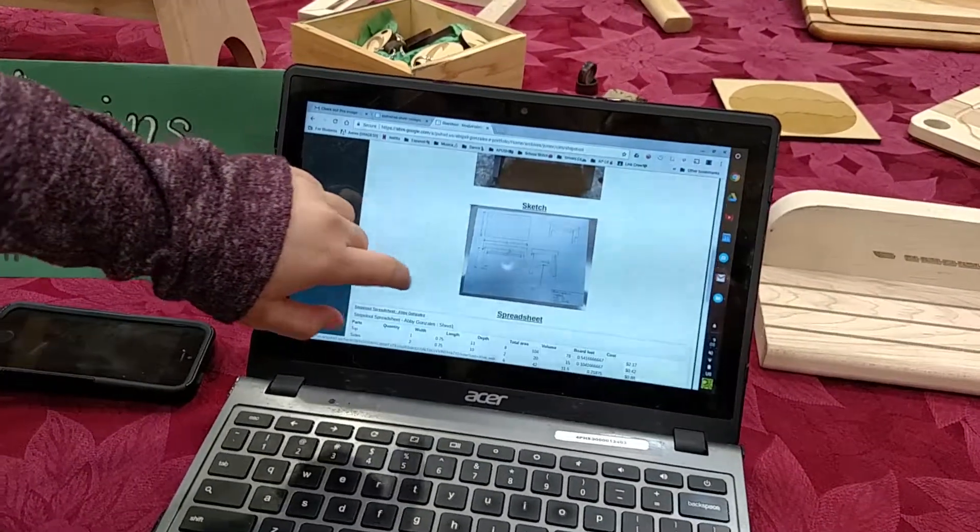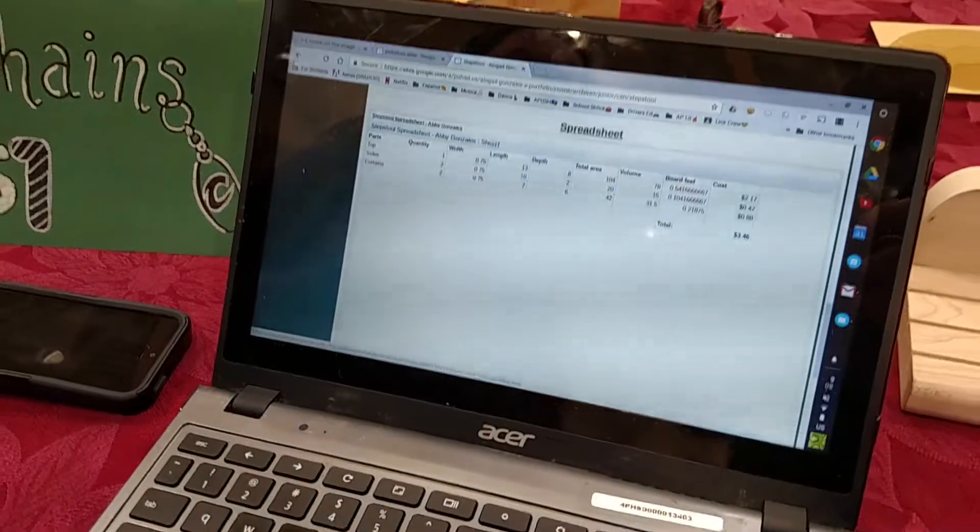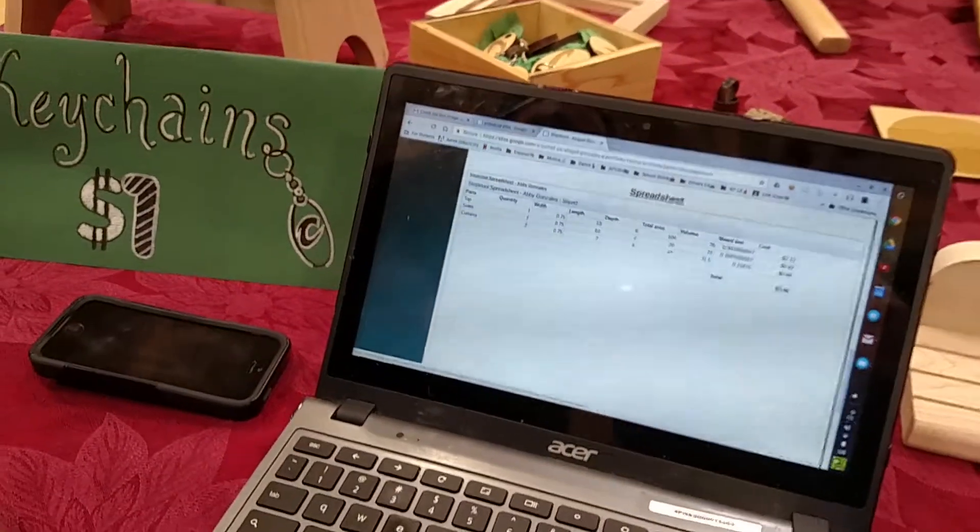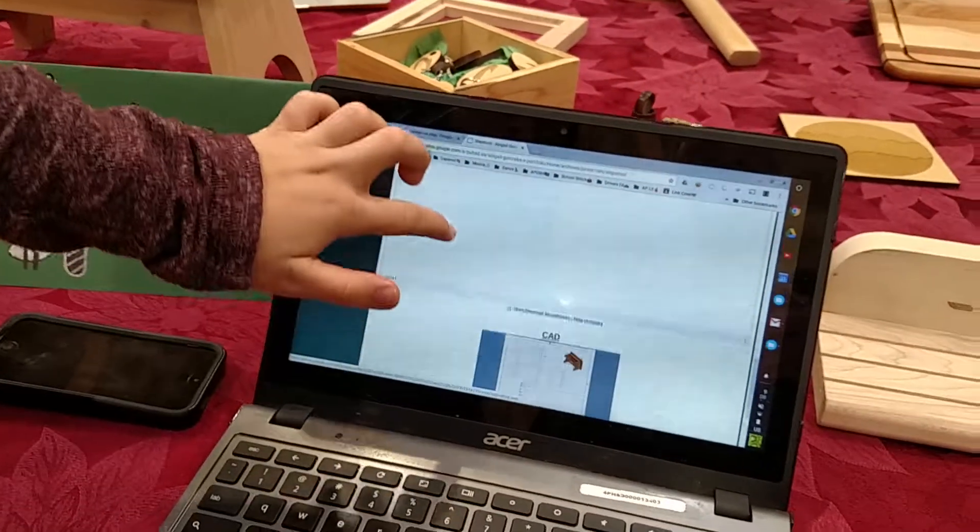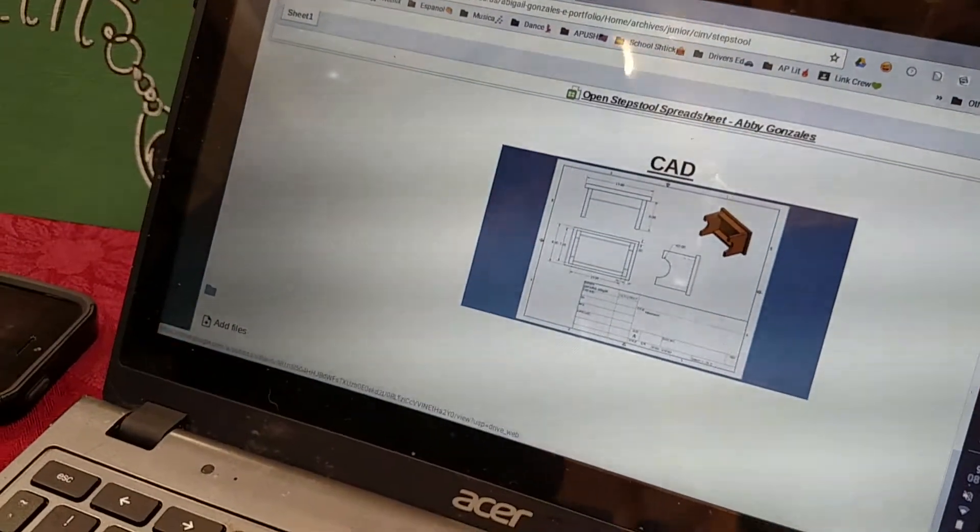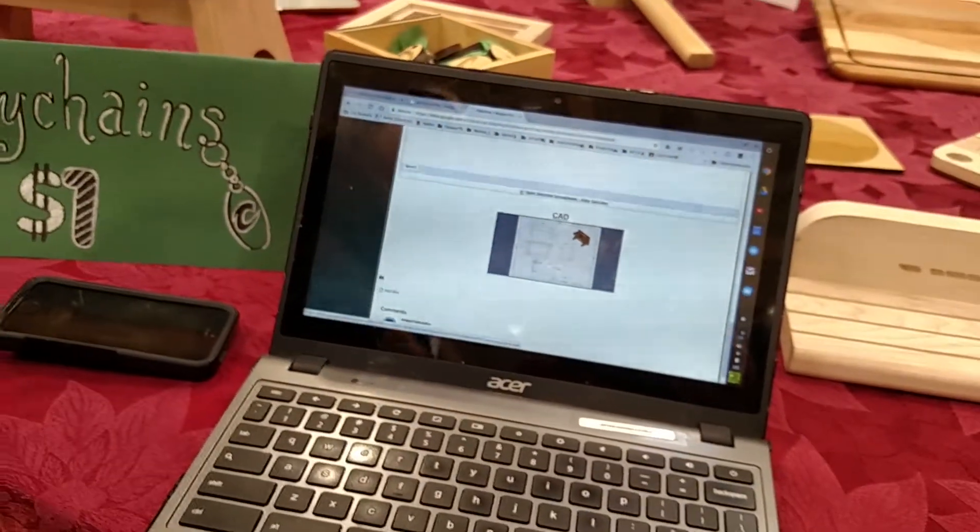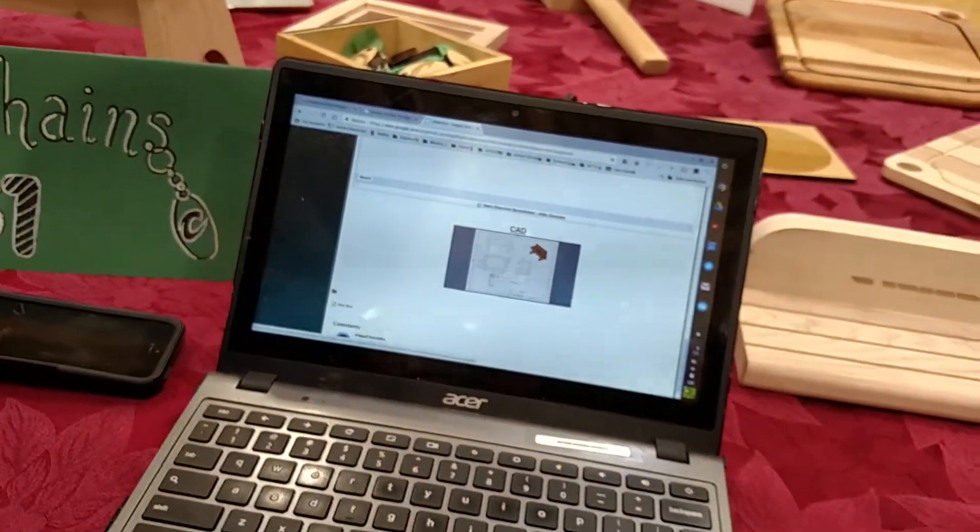We have a sketch to map out the pieces and a spreadsheet to see the total cost if you wanted to sell it and which wood to use. Then we have the CAD portfolio, which you make on Autodesk Inventor, to give us an idea of how to build the project before we physically do it.